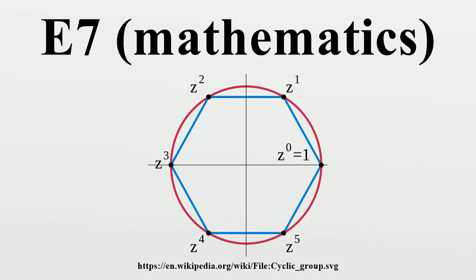The fundamental group of the complex form, compact real form, or any algebraic version of E7 is the cyclic group Z/2Z, and its outer automorphism group is the trivial group.